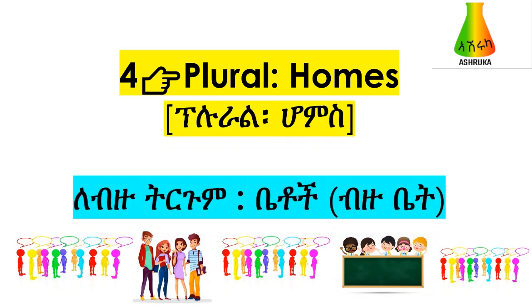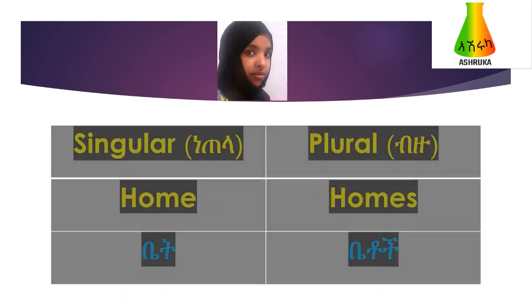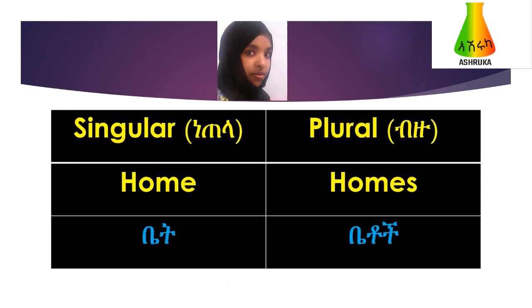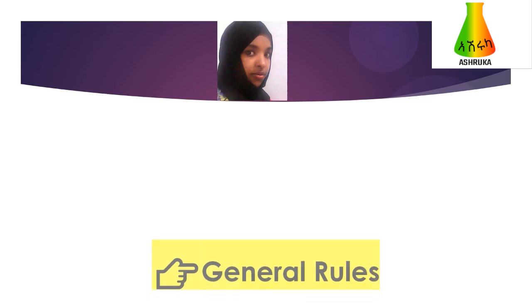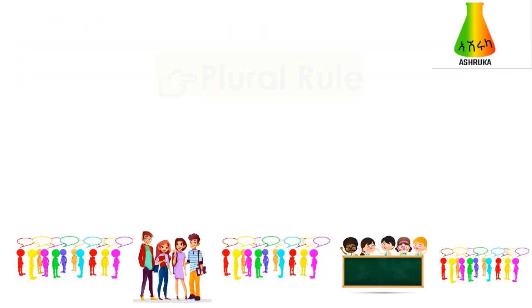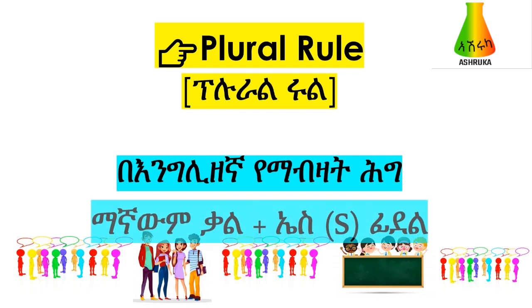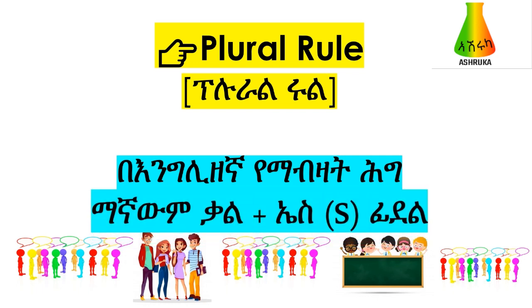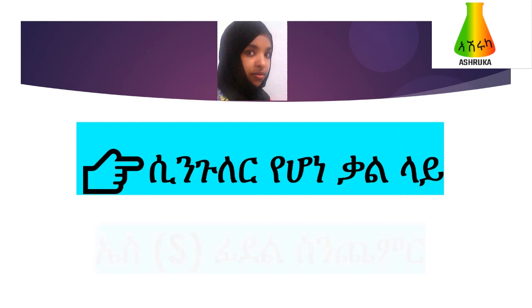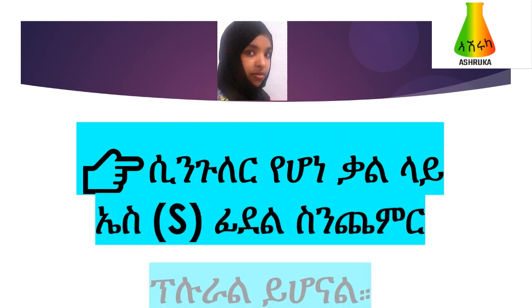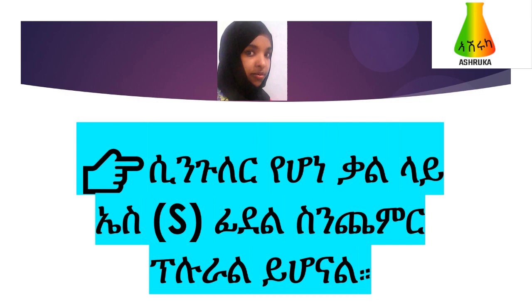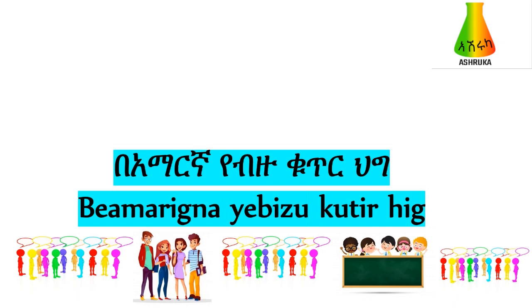The English rule for making plurals: a word plus S. Add S to a word to make it plural. For example, friend becomes friends, home becomes homes. This is the English plural rule.